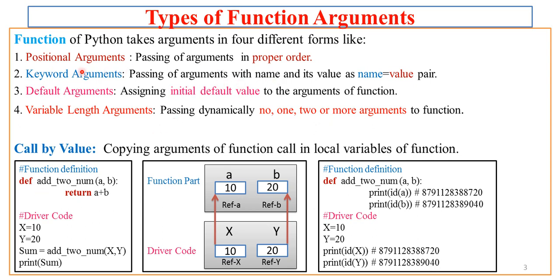The first type is positional arguments — that is, passing arguments in proper order. Whatever arguments you pass to the function will be in a specific order. In keyword arguments, you pass arguments with their name and value as a name-value pair, not just the values alone. Default arguments involve initializing default values to the arguments of the function.